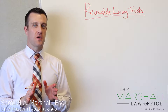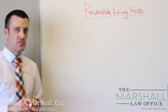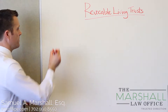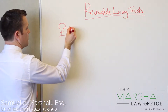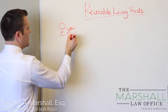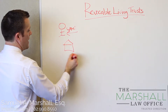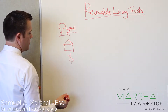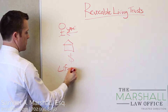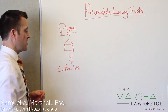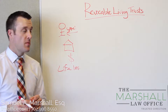The easiest way to explain what a living trust is, is through an illustration. Here's you. Let's say you own a home, and you have a bank account, and you have a life insurance policy, and you've named your minor children as the beneficiaries in the life insurance policy.